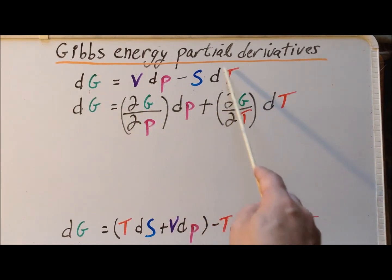And then similarly, with respect to dT. So we have the partial of G with respect to P dP, and then the partial of G with respect to T times dT.